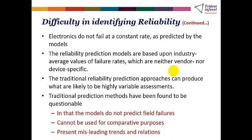Electronics do not fail at a constant rate as predicted by models — there will be variations. Reliability prediction models are based on industry average failure rates that are neither vendor-specific nor device-specific. Traditional reliability prediction approaches can produce highly variable assessments. For example, for a component working in a ground benign environment at 40 degrees, you may get a failure rate ranging from 700 FITs to 400,000 FITs, where your field failure rate, predicted value, and calculated value are all different.